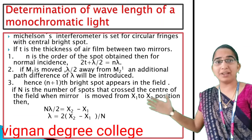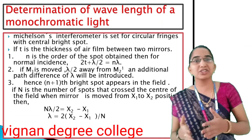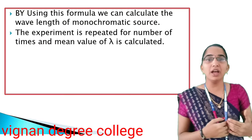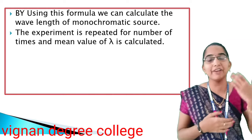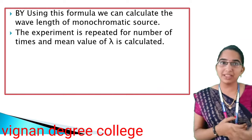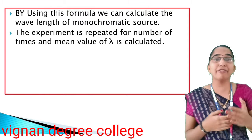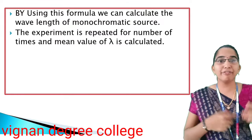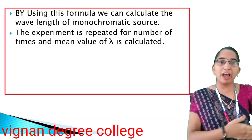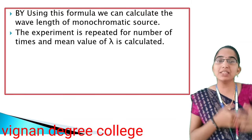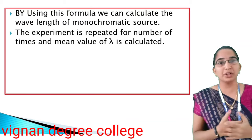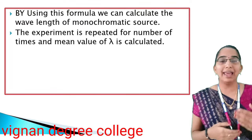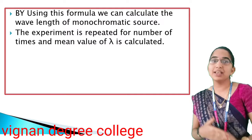By cross multiplication, λ = 2(X2 − X1)/N. Using this formula, you can calculate the wavelength of a monochromatic source. The experiment is repeated several times and the mean value of λ is calculated.